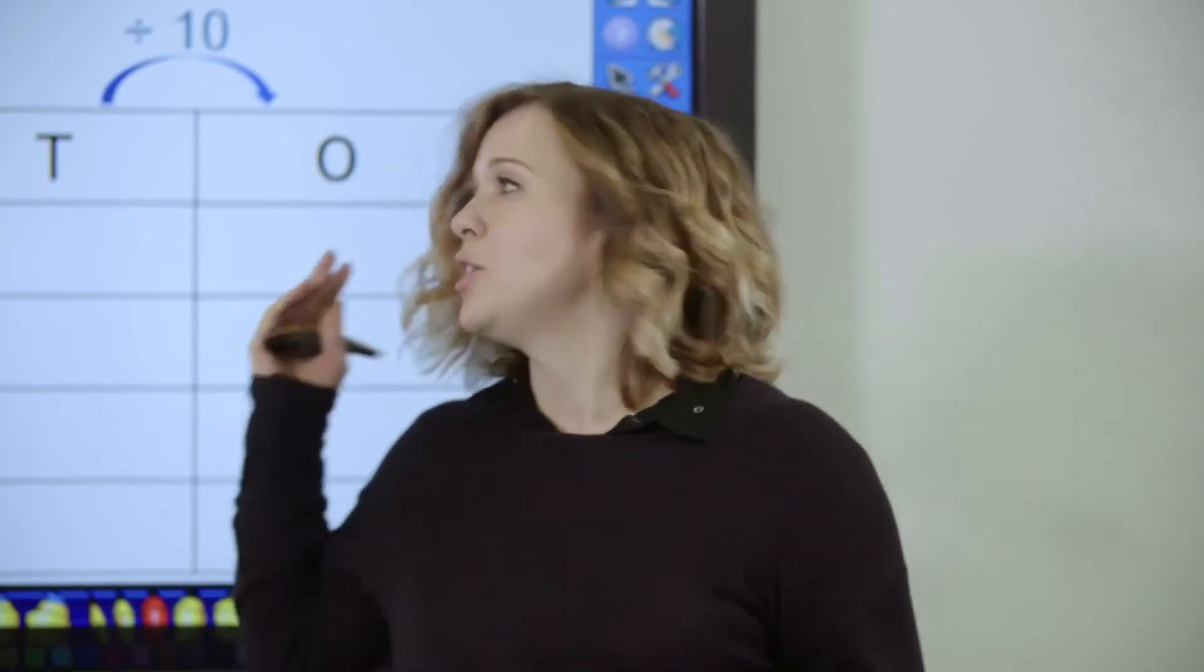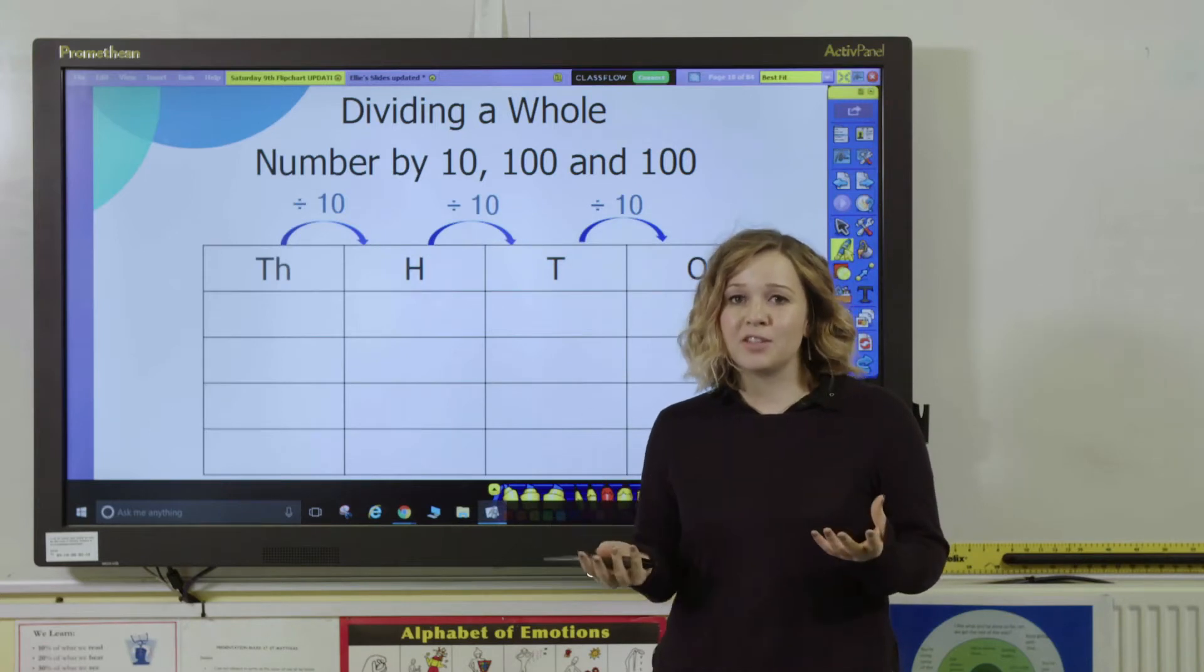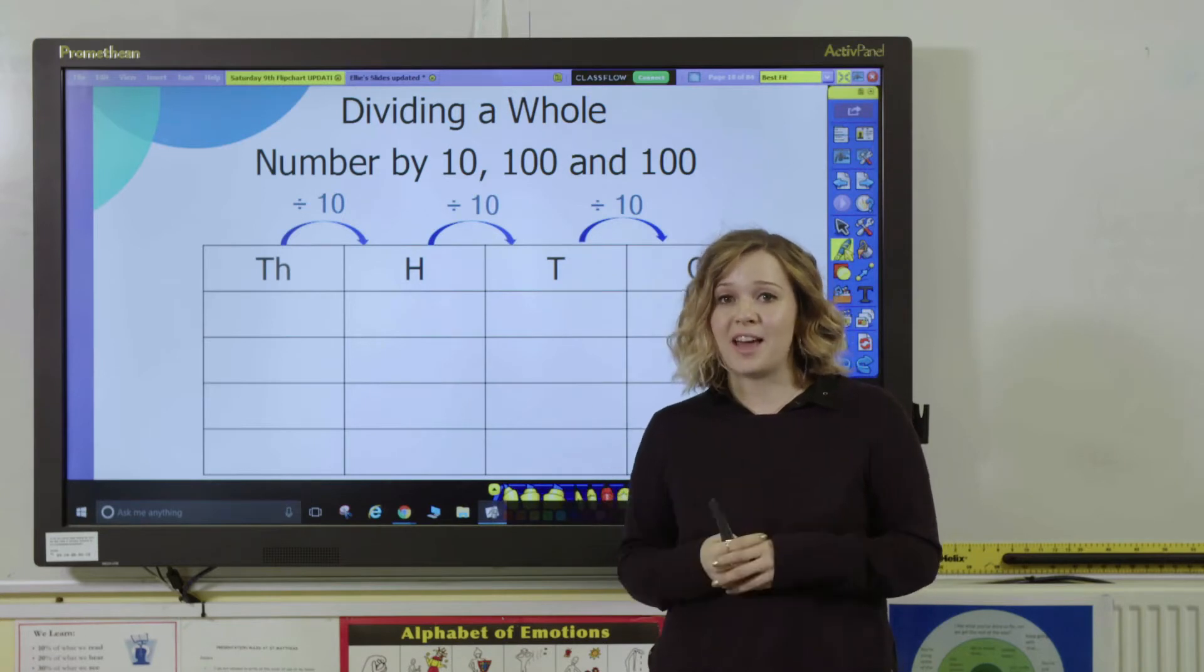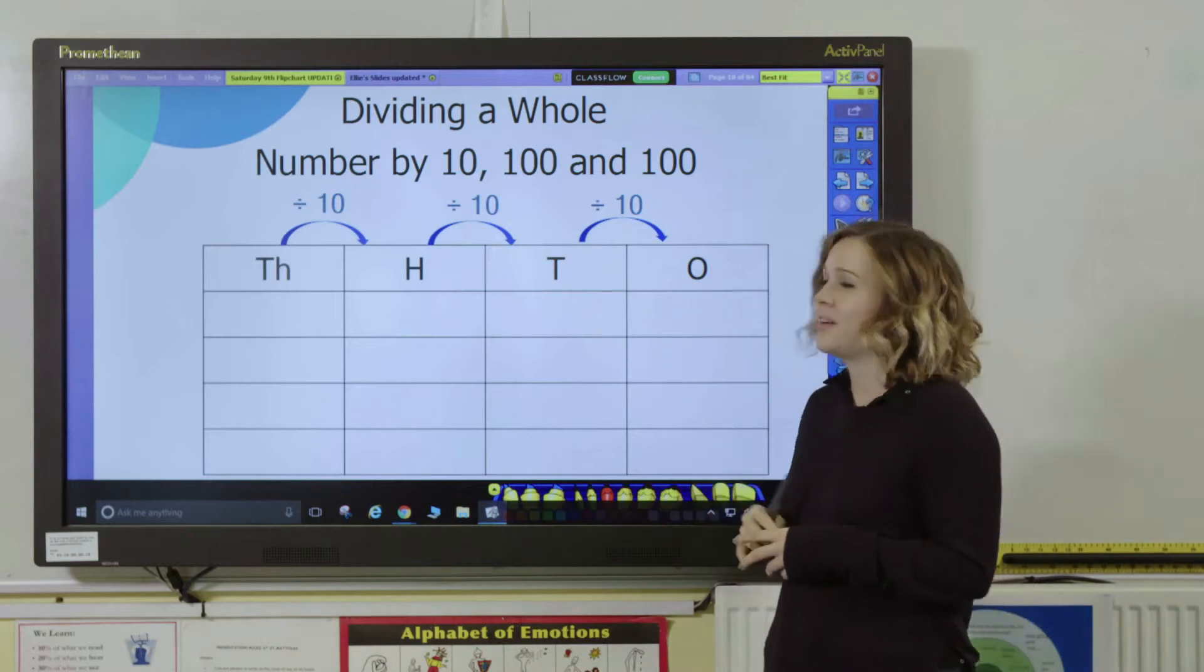So with division of numbers by 10, 100, and 1,000, you really want to have a place value chart to hand. There are lots of other practical resources you might use—you might have cubes and base 10 to help reinforce the concept—but let's start here with our place value chart.